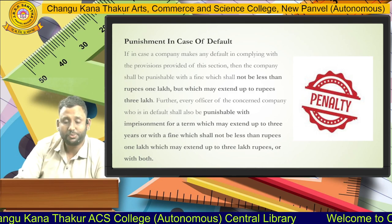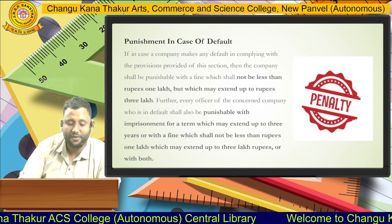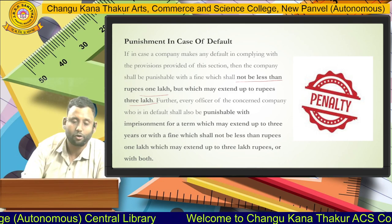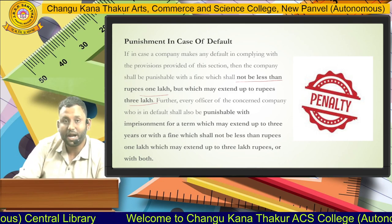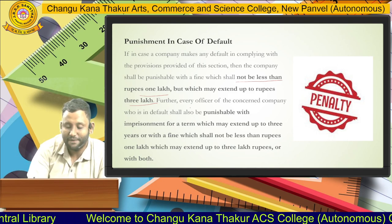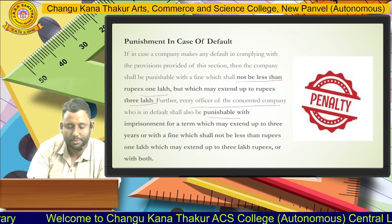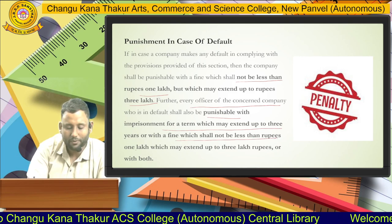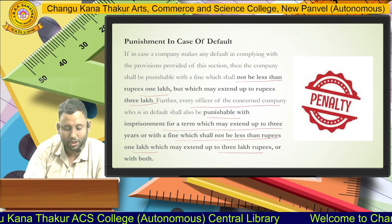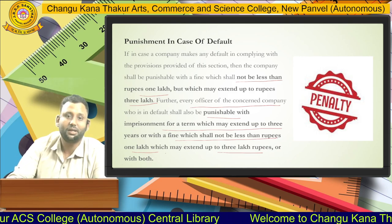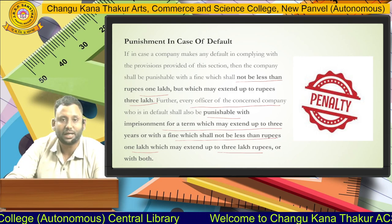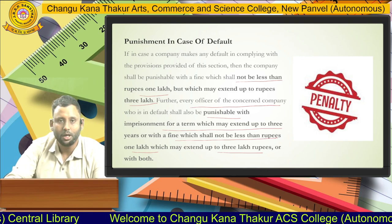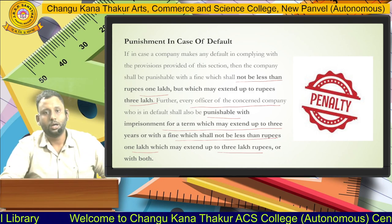Lastly, the punishment in case of default: for the company, a fine of not less than 1 lakh rupees, which may extend to 3 lakh rupees. For every officer of the concerned company, punishment with imprisonment extending up to 3 years, or a fine of not less than 1 lakh rupee which may extend to 3 lakh rupees, or both. So in this lecture we have seen the basic introduction, conditions, restrictions, and punishment in case of default in buyback. Thank you everyone.